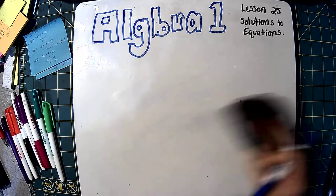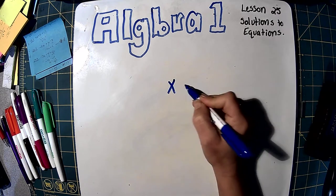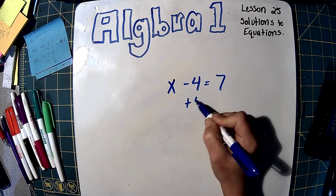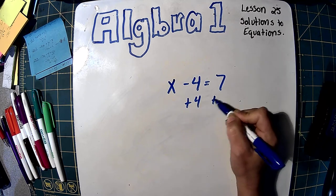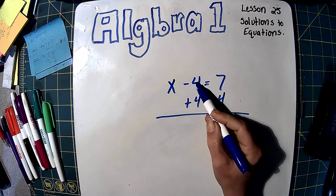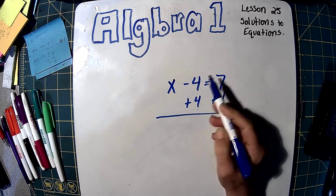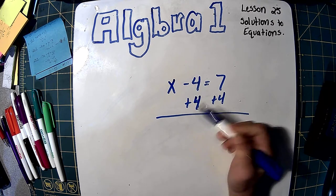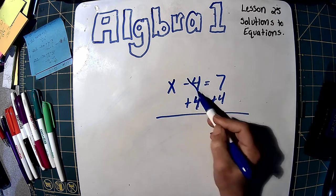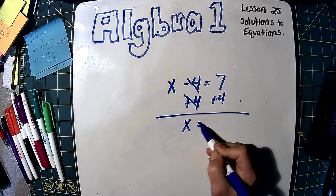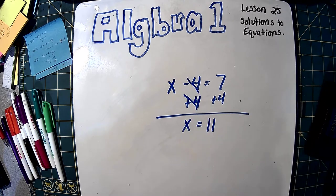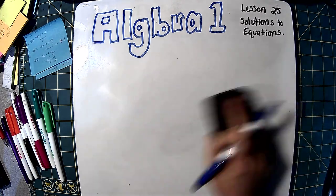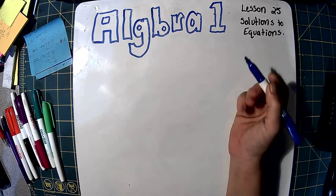Subtraction is the same way. So if we had x minus 4 equals 7, we would do plus 4 on both sides, because positive 4 is the opposite of negative 4. Those cancel. We get x equals 7 plus 4 is 11. That's how we get rid of our addition and our subtraction. And our goal is to get x by itself.